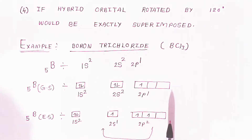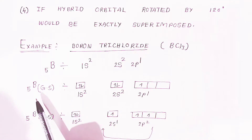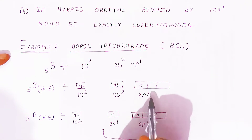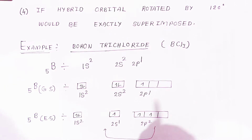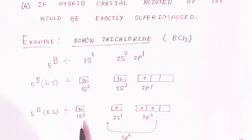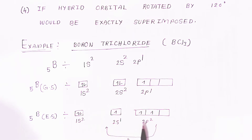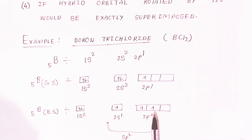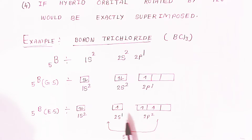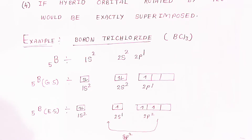When three chlorine atomic orbitals approach toward the boron, there will be excitation of electrons. The electrons from 2s will be excited and go to the p orbitals. So the excited electronic configuration of boron will be 1s2, 2s1, and 2p2 — one electron migrates to the 2py orbital. Then they mix and undergo sp2 hybridization, forming three sp2 hybrid orbitals.